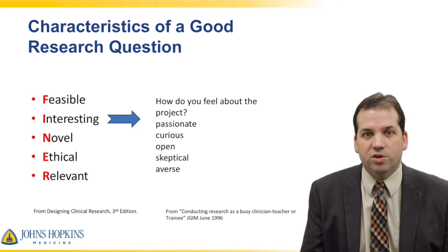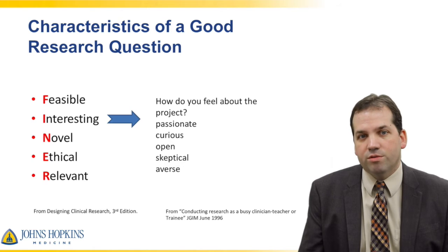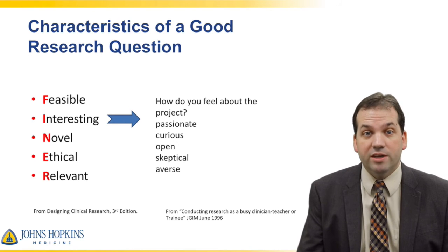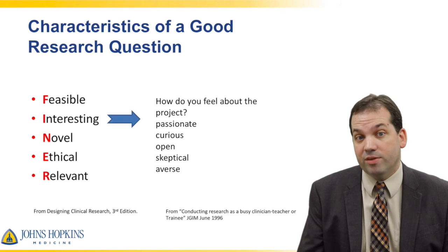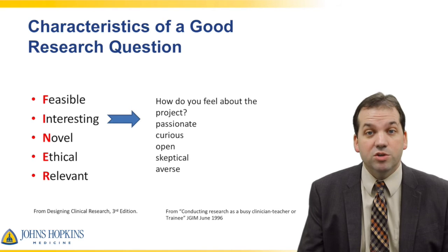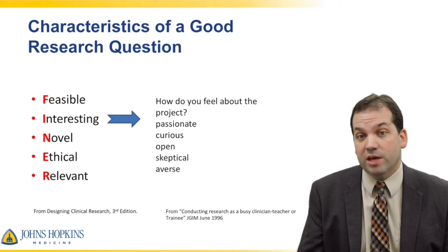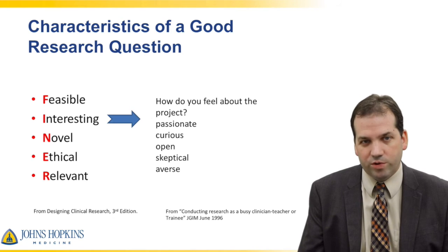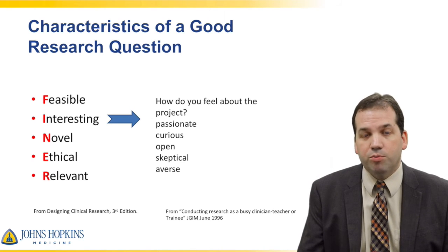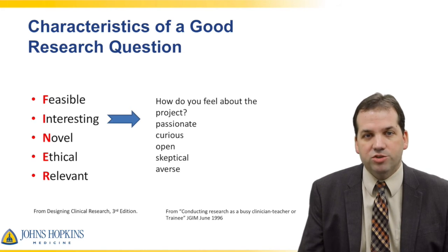When considering the characteristics of a good research question, we use the criteria called FINER — F-I-N-E-R — which stands for Feasible, Interesting, Novel, Ethical, and Relevant. Feasible: can you do it, is it possible, are you able to accomplish this? Interesting: are people excited about this, are you excited about this? Novel: is it new for the field, will other people say this is a really impactful thing? Ethical: make sure it is approved by your institutional review board and appropriate for the populations involved. And finally, Relevant: is this going to be an important aspect of the literature that carries things forward?